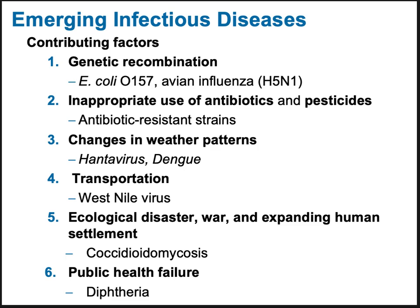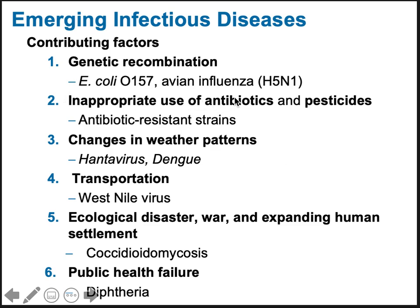Why do we see so many emerging infectious diseases? Contributing factors include viruses that mutate quickly, like influenza. Bacteria can share genetic information rapidly through plasmid sharing and pilus conjugation. Genetic recombination leads to big changes. Inappropriate use of antibiotics is the main reason for antibiotic-resistant strains. Pesticides and industrial farming chemicals, especially, are also a huge reason for resistance strains and large outbreaks.